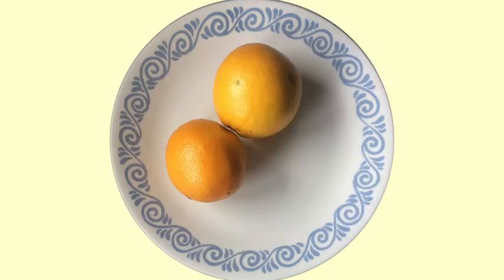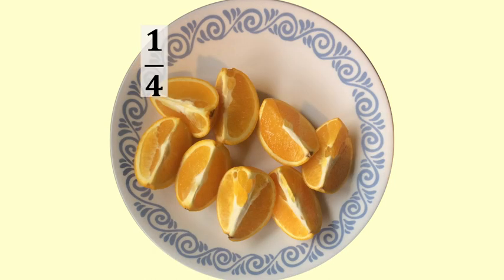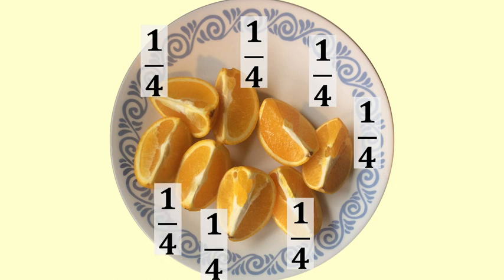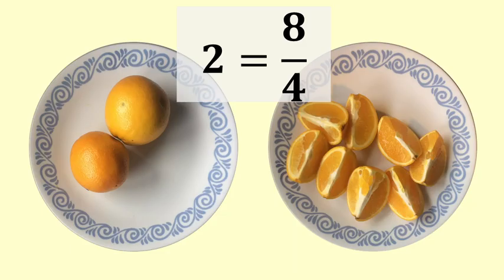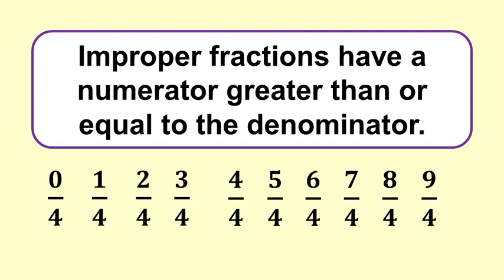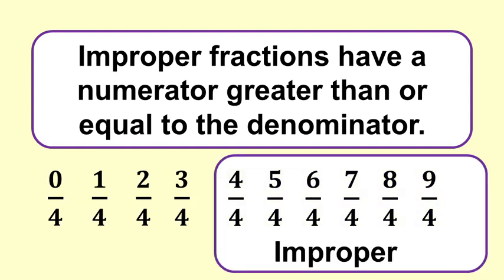Here are two oranges and here are two oranges cut into quarters. There are eight quarters altogether. When I write the fraction as eight over four, the numerator eight is greater than the denominator four, so it is called an improper fraction. Improper fractions have a numerator greater than or equal to the denominator.